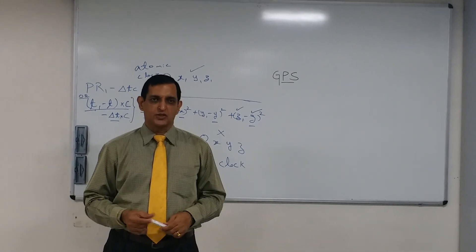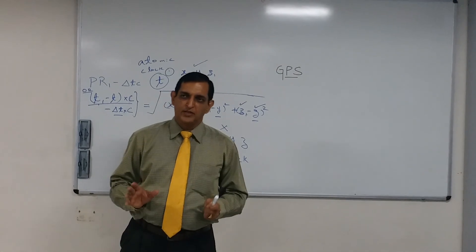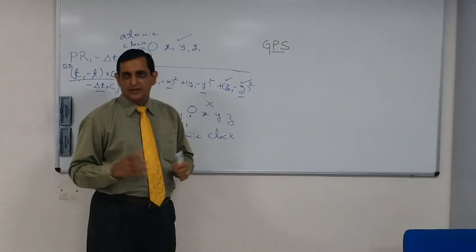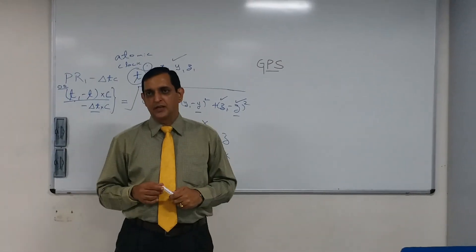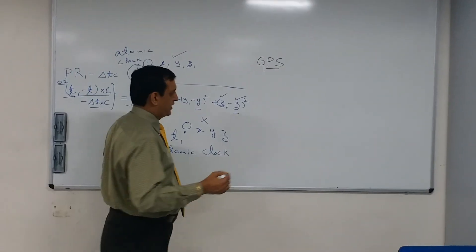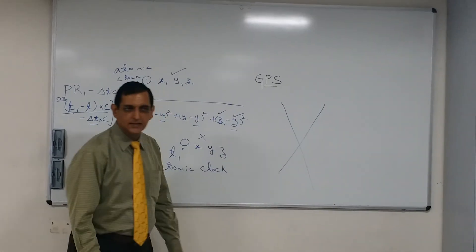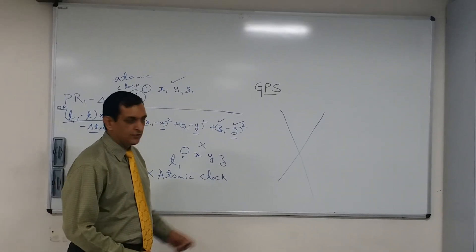What is next? Geometric dilution of precision. Now, basically you are aware if you take visual bearings let's say and the angle between the two bearings is very small. That means let's say the angle is something like this. What will be the accuracy of this fix?